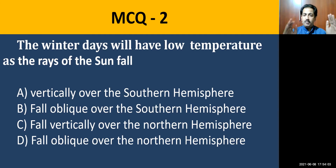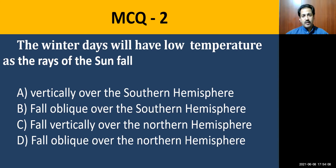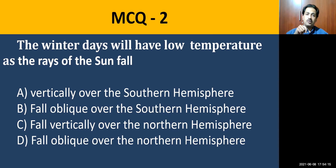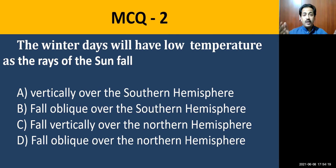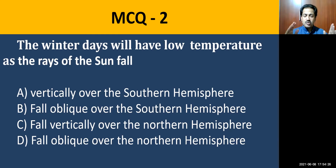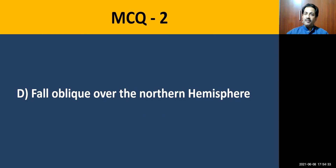During the winter days, the rays of the sun fall oblique over the northern hemisphere but vertical over the southern hemisphere. Due to oblique rays of the sun on the northern hemisphere, we have low temperature — that's why December, January, and almost the beginning of February we have very cold temperatures. The correct option is D: fall oblique over the northern hemisphere.